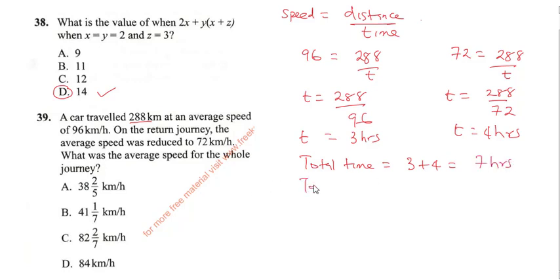Now the total distance covered, you will need to get the total distance because they are asking us the average speed for the whole journey. So the total distance covered is going to give us 288 plus 288. So that's going to be when you sum this up you are going to get 576 kilometers.